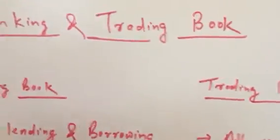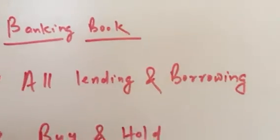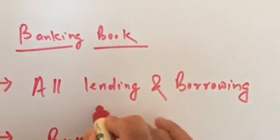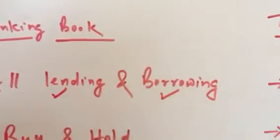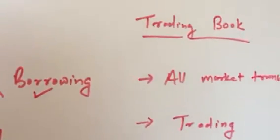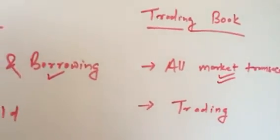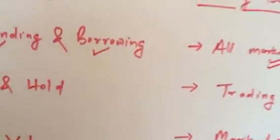So what are the features of banking book and what are the features of the trading book and how are they different? Banking book is all about lending and borrowing, whereas trading book is all about market transactions. So you are basically trading in the market, so there is a subtle difference between these two types of transactions.